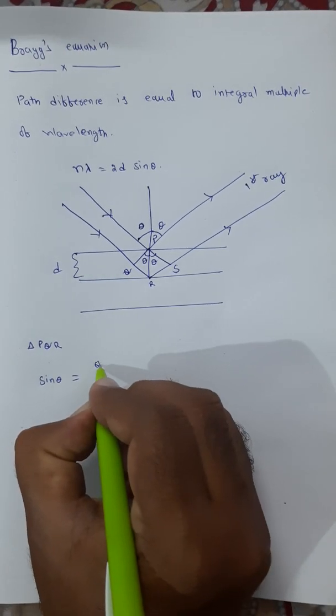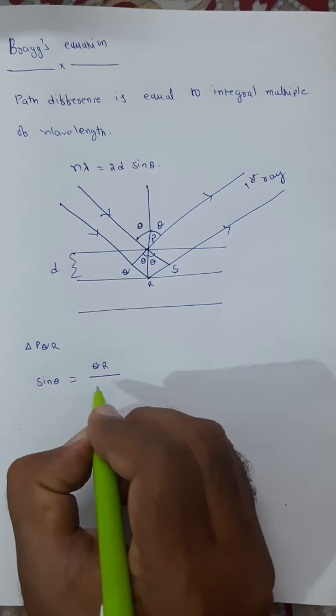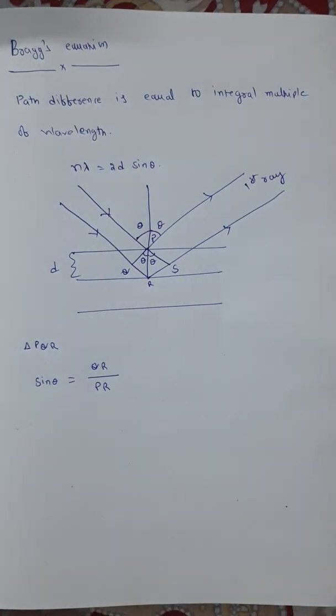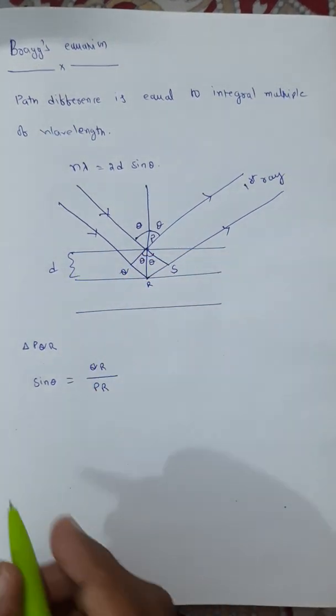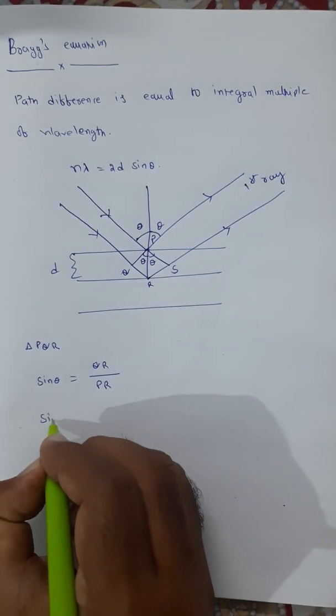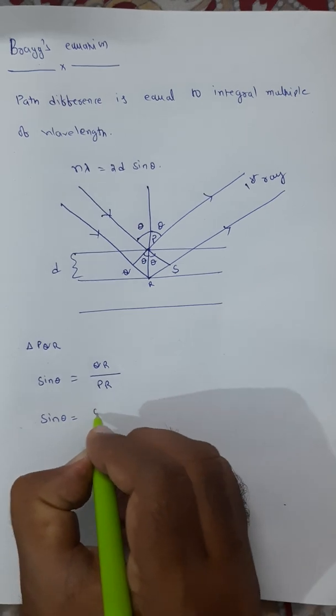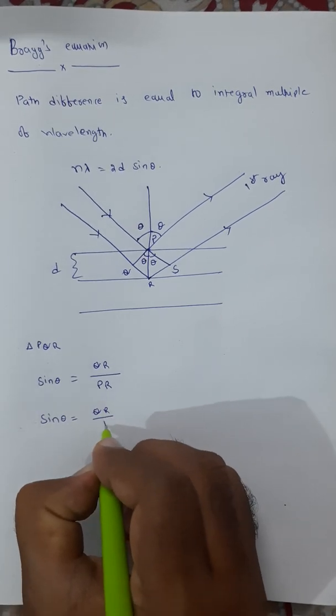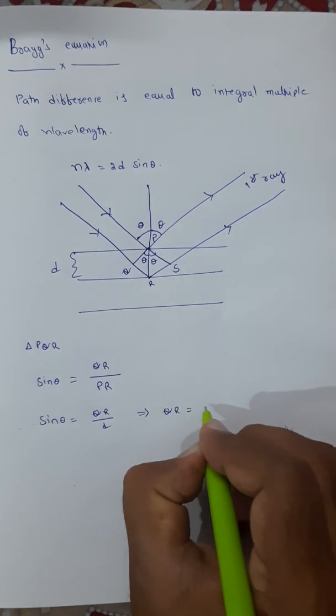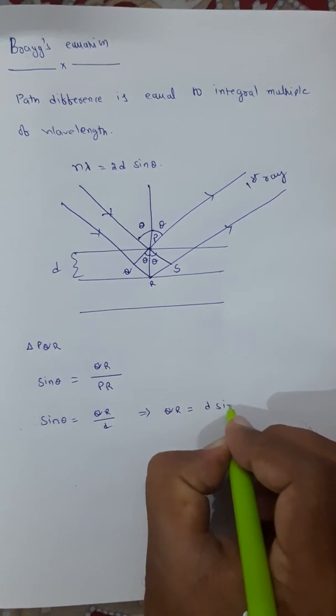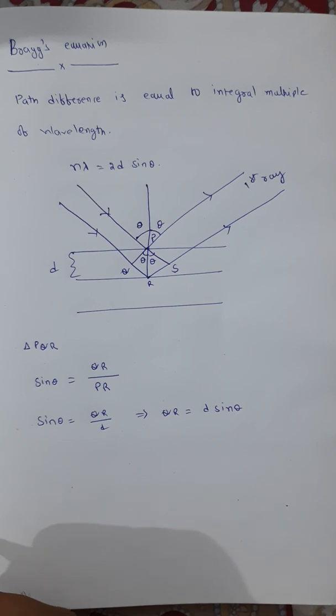From triangle PQR, sin theta equal to QR by PR. But PR is nothing but d. Therefore sin theta is equal to QR by d, which implies QR equal to d sin theta.